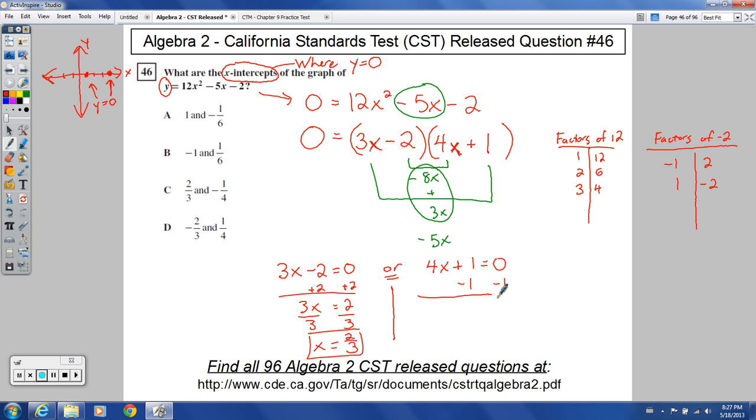So we have 4x equals negative 1, divide it by 4, and you get x equals negative 1 over 4. So two possibilities. You've got positive 2/3 and x is negative 1 over 4. Looks like that, my friends, is choice C.